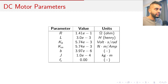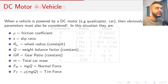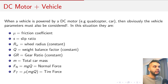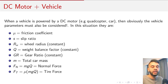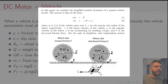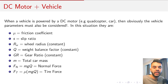When you have a vehicle powered by a DC motor you also have to take into consideration the vehicle parameters. Since we have a car, we have traction and slip. The key values are: friction coefficient mu, slip ratio s, wheel size rw, weight balance factor q (how much weight is distributed on the motor), gear ratio, car mass, car normal force (mg times q), and the tire force (friction coefficient times mgq).